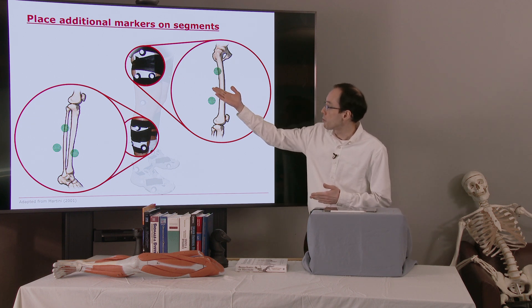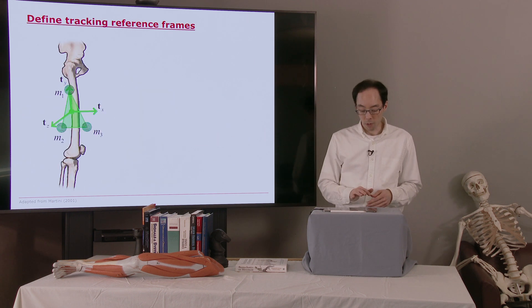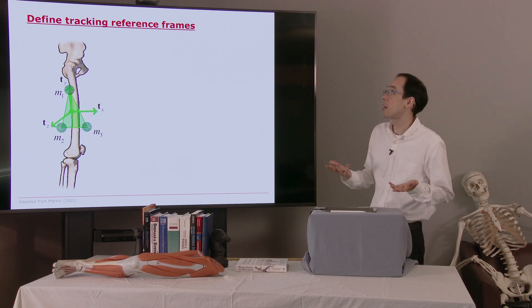So here we've put some markers on the thigh, some markers on the shank, and we can use these to define reference frames very similar to what we saw before, but these we would call tracking reference frames.